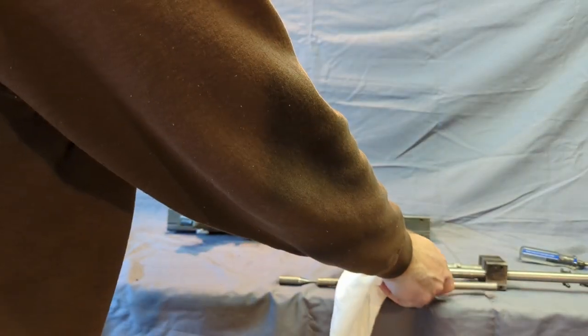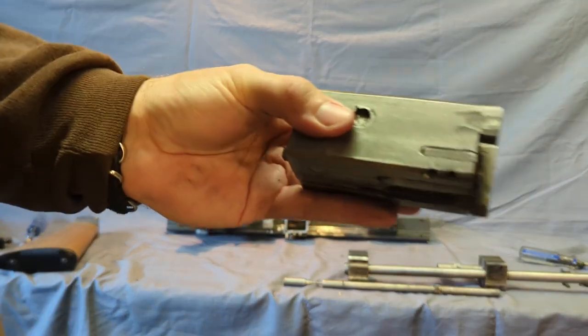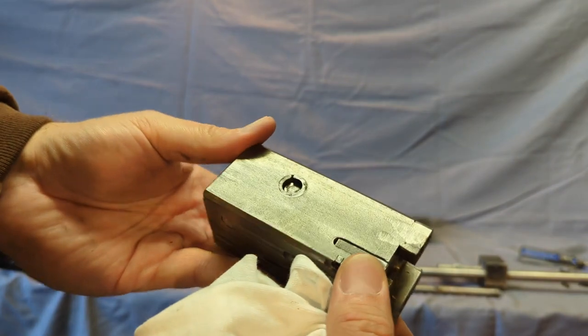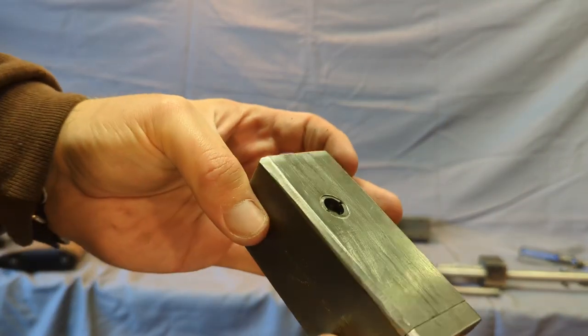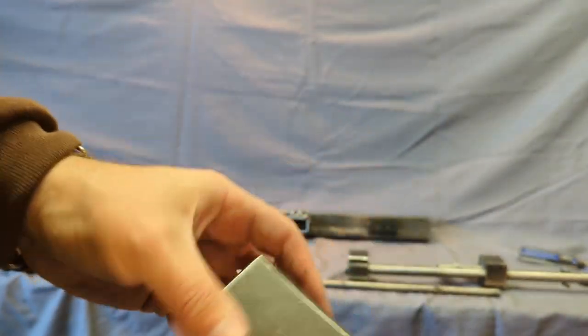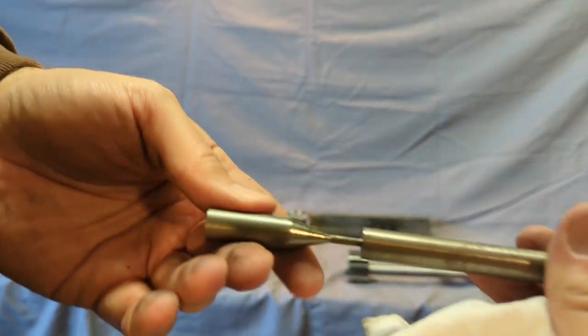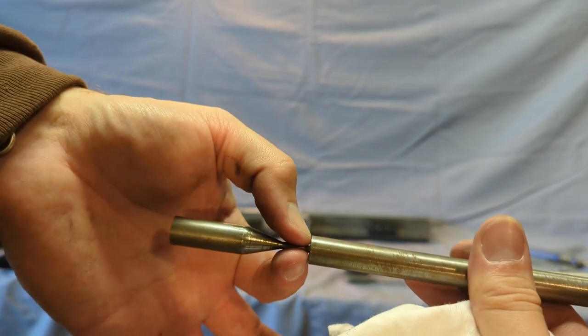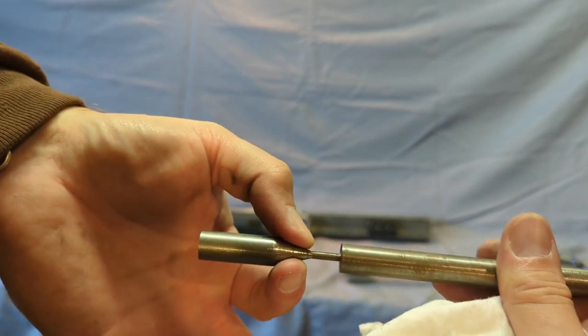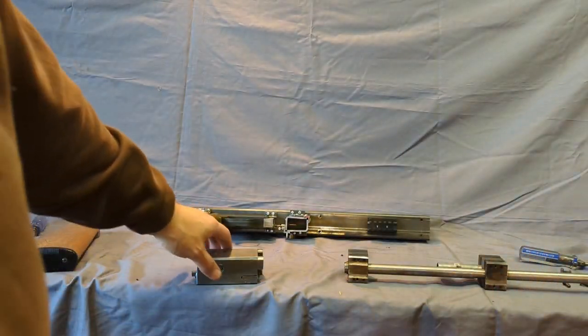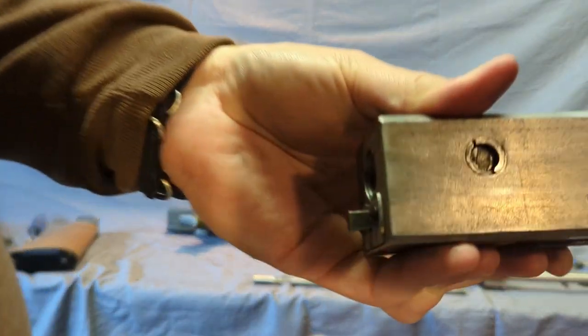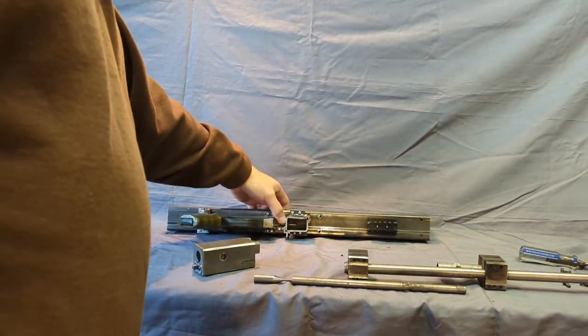Take out that action rod. Now we have one gigantic bolt for a 9mm. You can kind of see how those locking lugs work. There's a wedge on the front of this right here, and those two lugs, when you close the bolt, they expand out—come out of the bolt—and protrude through these holes right here in the receiver.